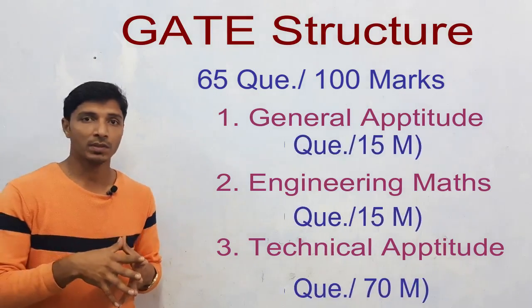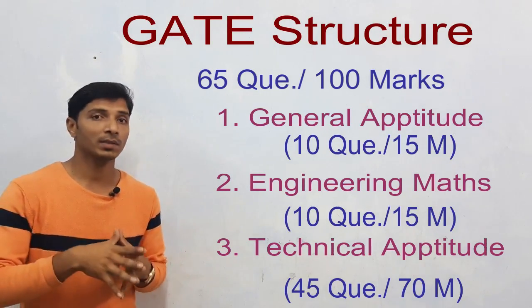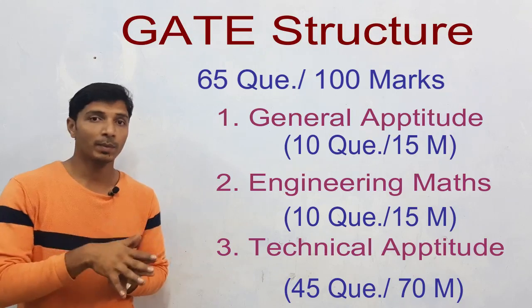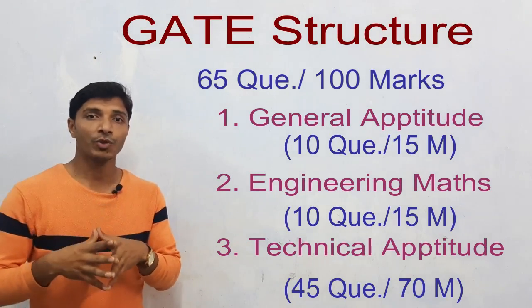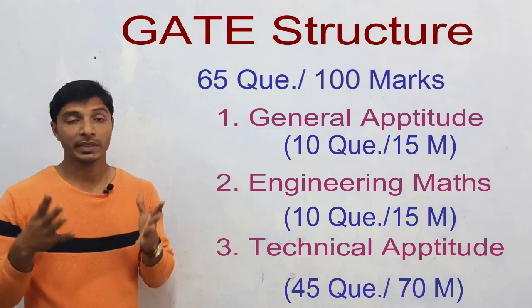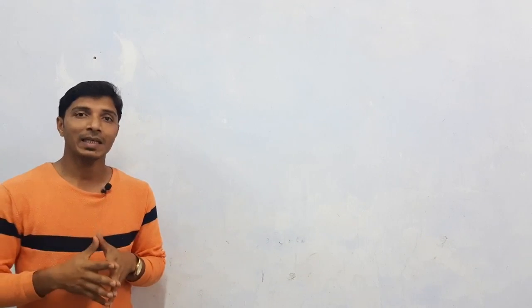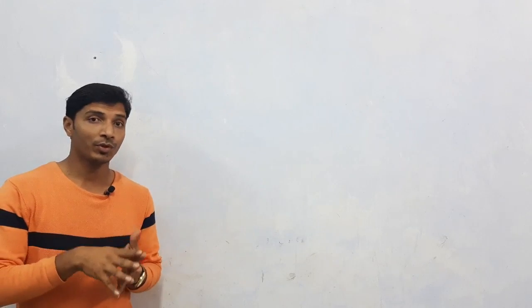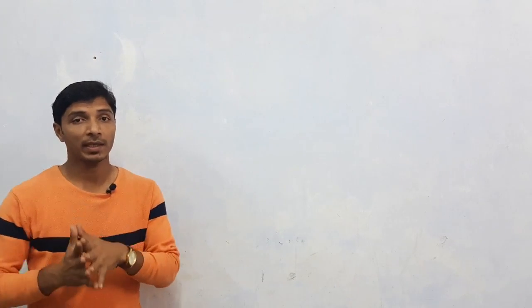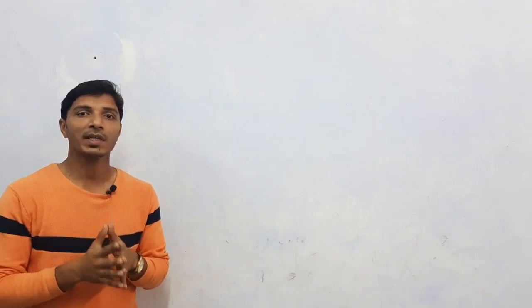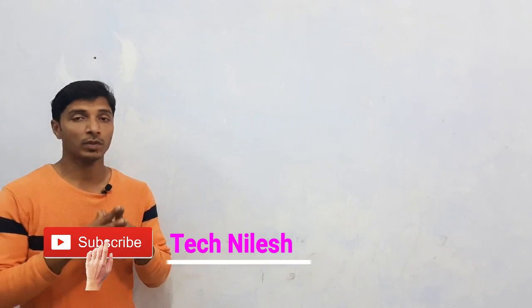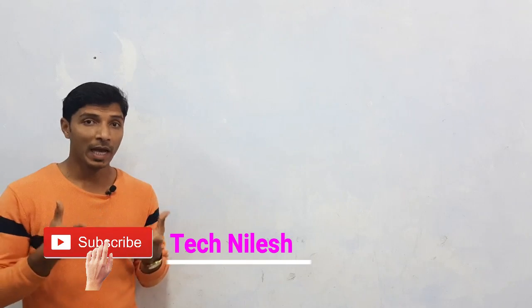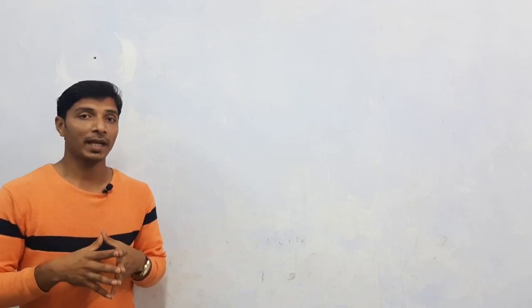For General Aptitude: 15 marks and 10 questions — 5 questions of 1 mark and 5 questions of 2 marks. Similarly, Engineering Mathematics is 15 marks and 10 questions. Technical Aptitude has 45 questions and 70 marks. You can more easily score marks from General Aptitude and Engineering Mathematics compared to the Technical part, so emphasize these 2 sections. For a very high score and good rank, you should focus on all 3 sections.